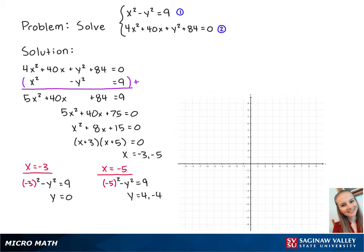Now that we have our x and y values, we can see that the intersecting points are at negative 3, 0, negative 5, 4, and negative 5, negative 4. And this is the solution to the problem.